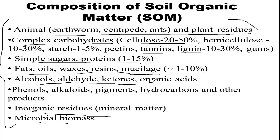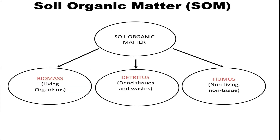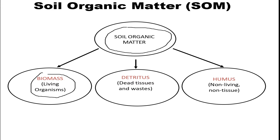It also contains inorganic residues and microbial mass. That covers the full composition of soil organic matter. Moving on, soil organic matter is basically divided into three types: biomass, detritus, and humus. Biomass refers to living organisms, detritus is dead tissues and wastes, and humus is the non-living, non-tissue part.